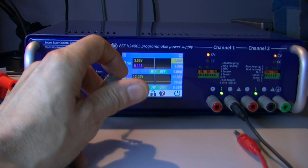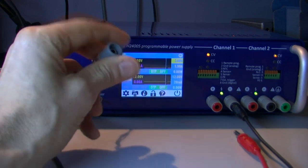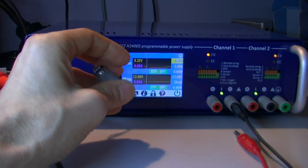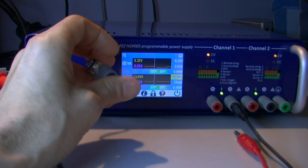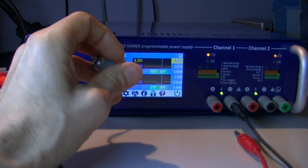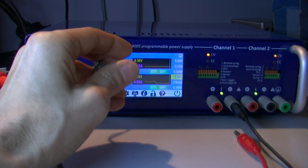So each click you can go like this. Here I can change channel 1 voltage, current, channel 2 voltage, and so on. So this is the selection mode.